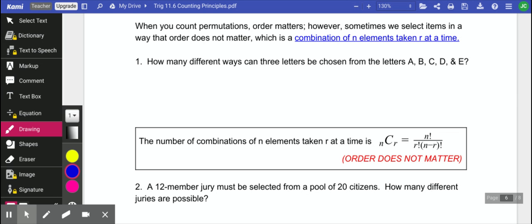For example, how many different ways can three letters be chosen from A, B, C, D, and E? This is like you are going to a concert, but you can only invite three of your friends and you have five to choose from, and you want to know how many different combinations can you have.